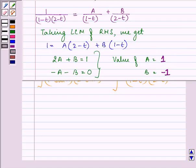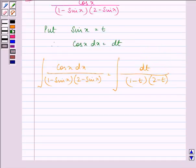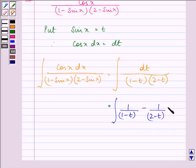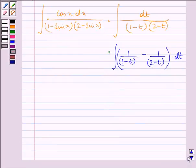We have now the function written as integral 1 upon 1 minus t minus 1 upon 2 minus t into dt.